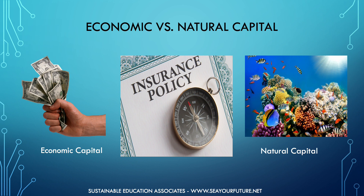Although the Earth does not have a bank account, it does have its own form of wealth, known as natural capital. Natural capital refers to the resources and services that keep ecosystems in balance and life in existence. Probably the most important aspect of natural capital is biodiversity — it's like an insurance policy for life on Earth.